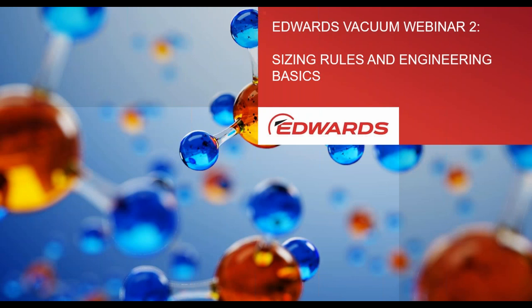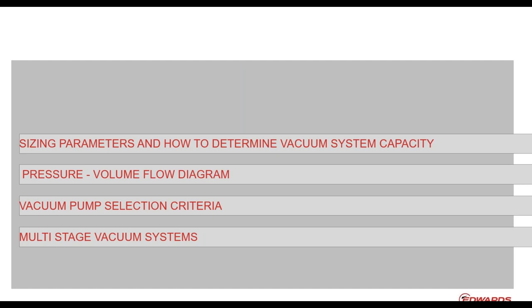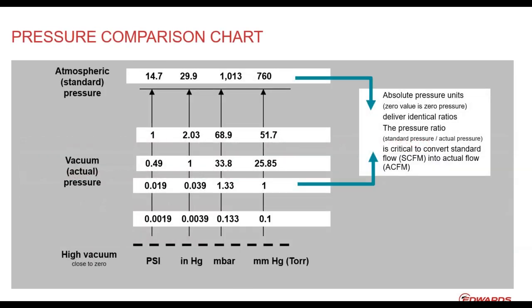Thank you Matt, and welcome from my side as well to this second webinar in this series of three Edwards webinars focused on the chemical and process industry. This session is called 'Sizing Rules and Engineering Basics.' What I want to go through with you today is show you some sizing parameters and how to determine vacuum system capacity. I'd like to show you the different angles — typically from the process side — and get you more familiar with the pressure-volume-flow diagram, vacuum pump selection criteria, and briefly dive into multi-stage vacuum systems.